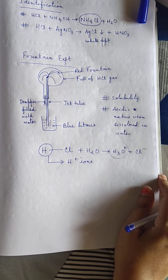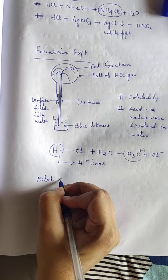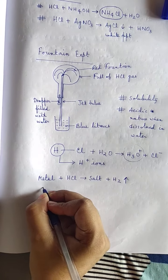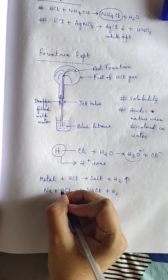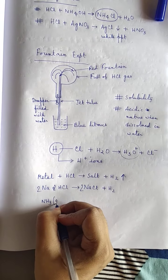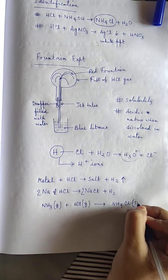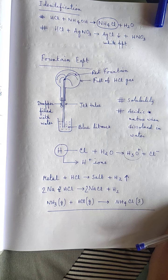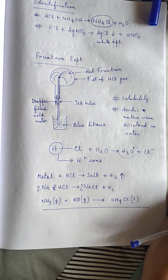Hydrogen chloride gas is neither a supporter of combustion nor a combustible gas. HCl gas generally reacts with metals to produce a metallic chloride (salt) plus hydrogen gas — for example, Na reacts with HCl to produce NaCl. Hydrogen chloride gas also combines with ammonia gas to produce a white solid ammonium chloride. This is an example of two gases reacting to produce a solid — ammonia and hydrogen chloride are in the gaseous state and ammonium chloride is in the solid state.